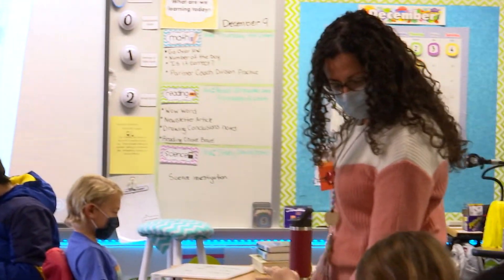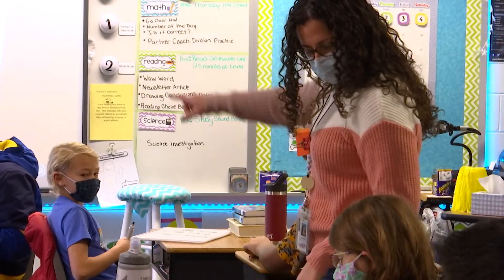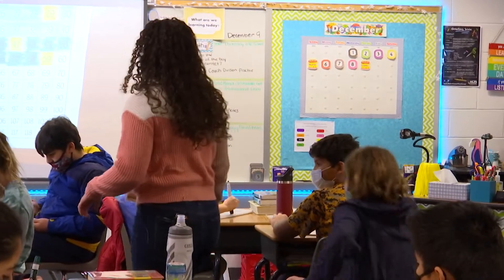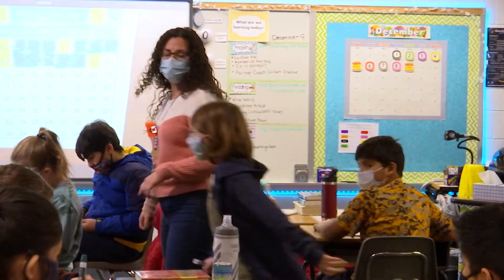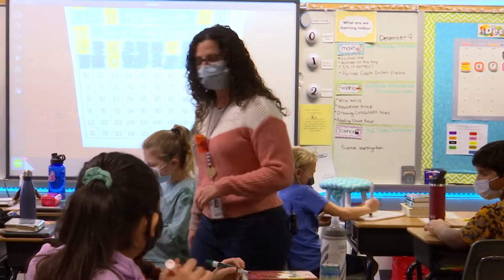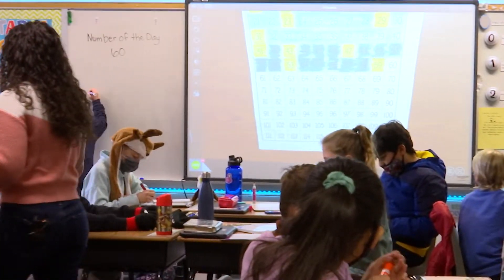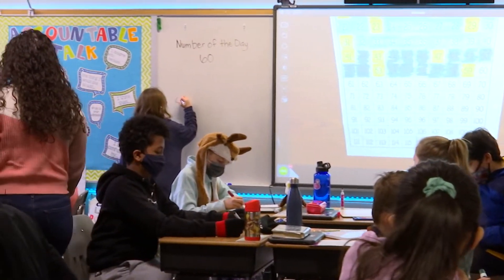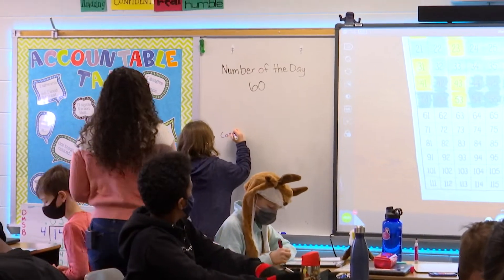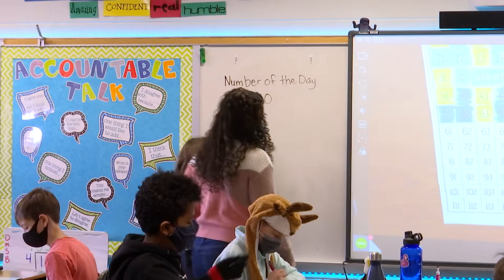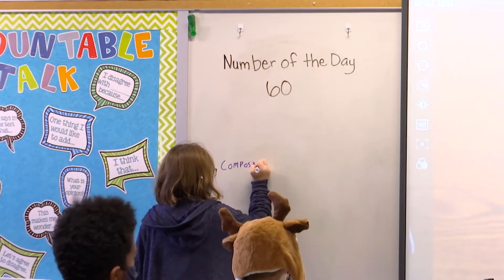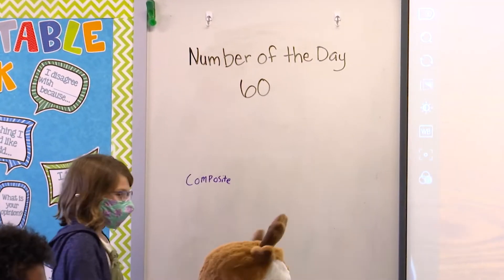Will you please go right up on the board what you wrote for the number 60. Cortland is going to share what she identified for 60. So make sure you're checking over yours, seeing if yours is comparing to hers. Good, I like how you're using your notes.